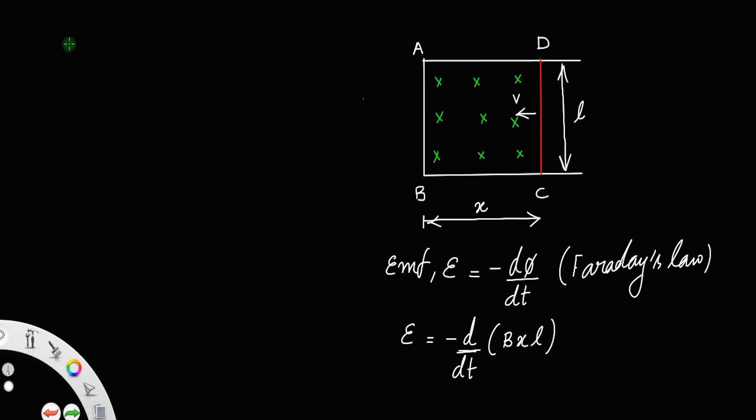We have EMF E equal to, look here B and L remain constant, so you can take that outside. So it is equal to minus BL, d by dt of x. The length of the rod does not change. This rod can move in the horizontal direction, but this length L is fixed. Now we have E equal to minus BL. We have the derivative of position, dx by dt. Derivative of displacement with respect to time will give the velocity.